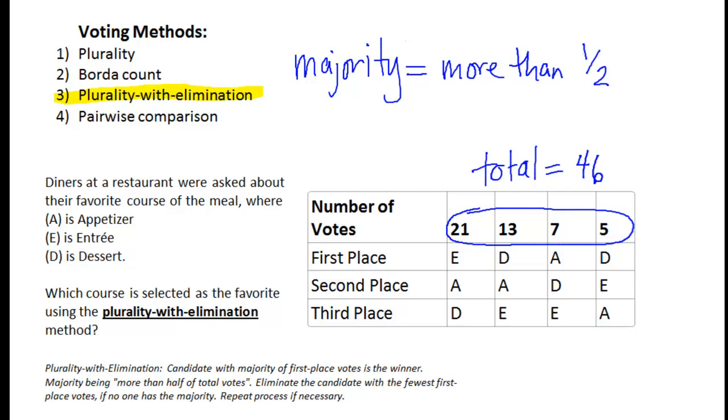So 23 rounded up to the next number would be 24. Half of the votes is 23, that's half of this total right here. But what we're looking for is 24 or more. That's what majority really means. It's 24 or more in this particular case. So 24 or more is considered the majority.